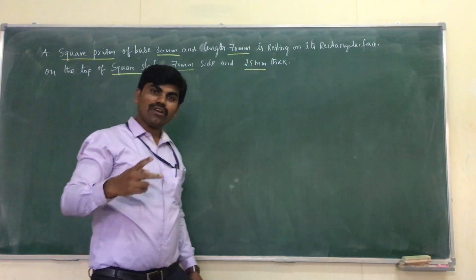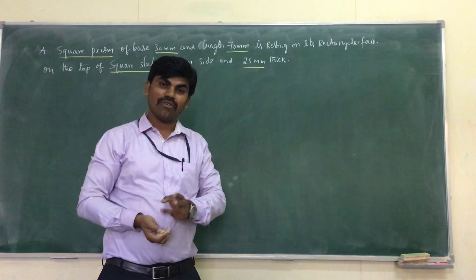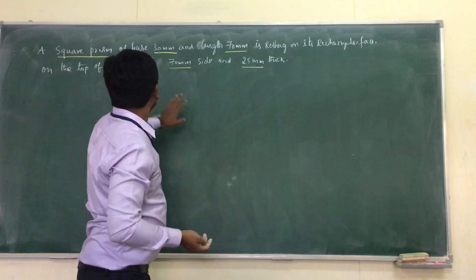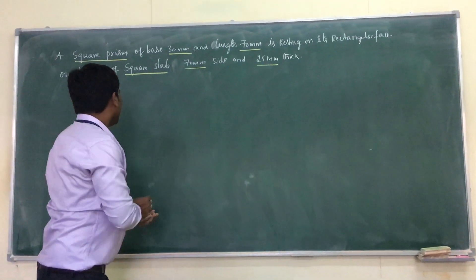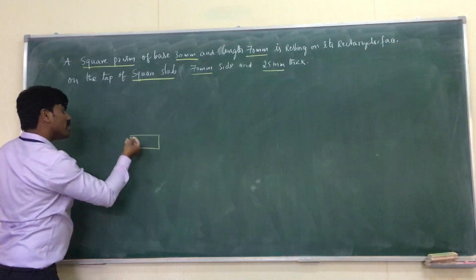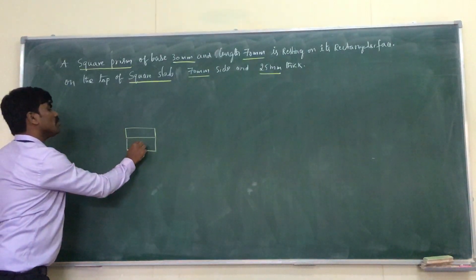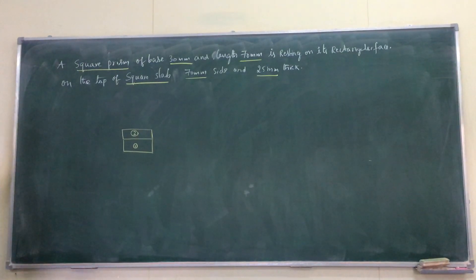First in the exam you need to identify how many solids are there. In the syllabus only two solid combinations are covered. If you check here there's a square slab and a square prism. Roughly you draw - there's a slab like this, there's a prism, one more prism like this. There are two solids: number 1 and number 2. One is a square slab, the other one is a square prism.